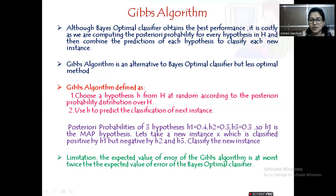This could be at most, at worst, twice the expected value of error of the Bayes Optimal Classifier. That means the error that we obtain in Bayes Optimal Classifier will be a minimum one compared to the Gibbs algorithm. It could be at worst twice the value. We don't know what the exact value of error will be.